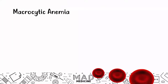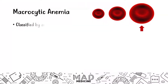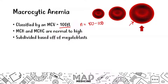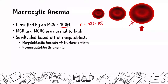Let's talk about macrocytic anemias. These are anemias classified by an MCV greater than 100. Normal MCV is 80 to 100. In this case, you're going to have a large red blood cell, and thus your MCV — your mean corpuscular volume — is going to be greater than 100, as shown with this arrow pointing to a large red blood cell. The MCH and MCHC are usually going to be normal to high. You can subdivide macrocytic anemias based on megaloblasts: you can have megaloblastic anemias where nuclear deficits lead to macrocytic anemia, and you can have non-megaloblastic anemias.